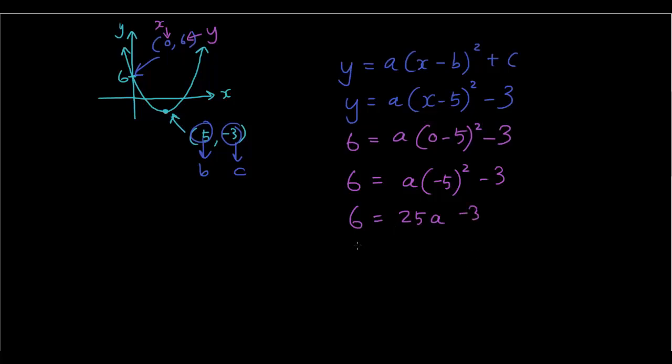Moving the negative 3 to the other side, 6 plus 3 is 25a. 9 is 25a divided by 25 on both sides. I have a equals 9 over 25. So the equation should be y equals 9 over 25 bracket x minus 5, x minus 5 squared minus 3.